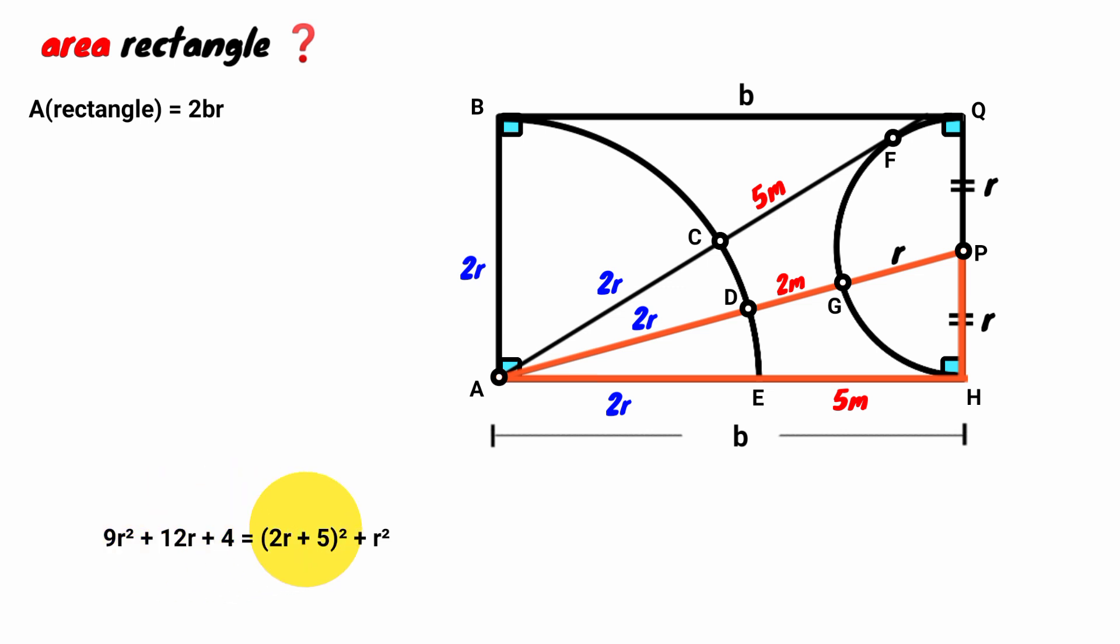This bracket, expand it. It is 4R squared plus 20R plus 25. 4R squared plus 2R squared is 5R squared. Take transpose of 5R squared to the left. 9R squared minus 5R squared is 4R squared. These also, take them to the left. 12R minus 20R is minus 8R plus 4 minus 25 is minus 21. So 4R squared minus 8R minus 21 equals 0.